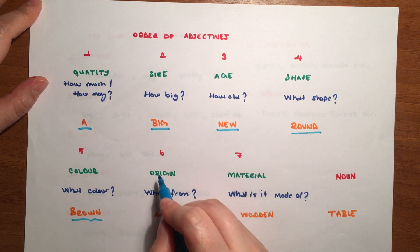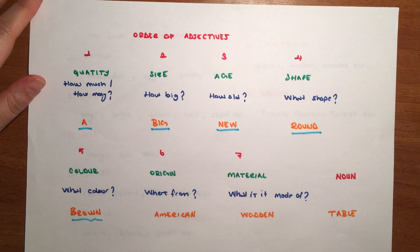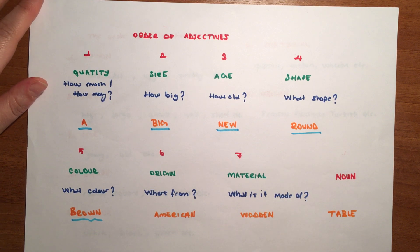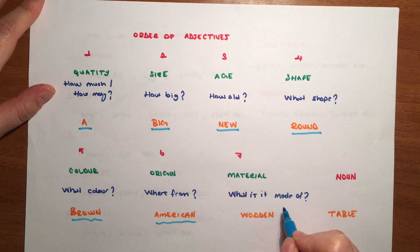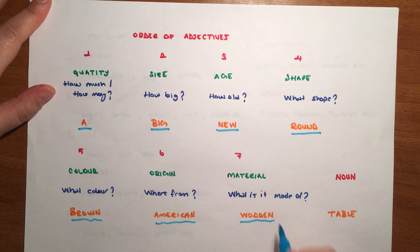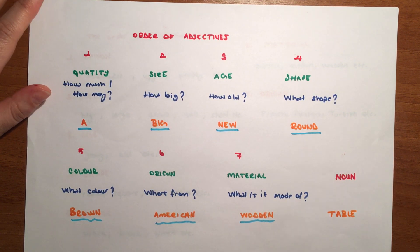And then our noun. What did we do? So we made a long adjective phrase, defining it with seven things. A big, new, round, brown, American, wooden table.